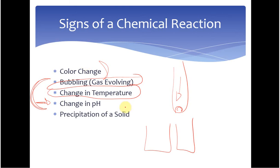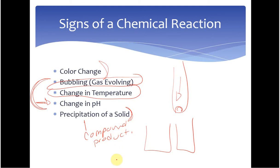Finally, we have precipitation of a solid. This does not mean you have a solid and a liquid that you add together and get a solution. We want to see a precipitation specifically of a compound on the product side. We do not count things like calcium metal or aluminum metal — we are only counting solid compounds formed as a product. Last week in lab you saw the formation of copper solid; it's not a compound, so it is not a precipitation reaction.